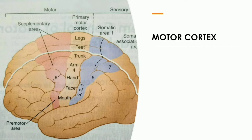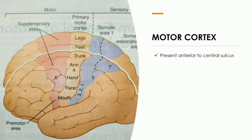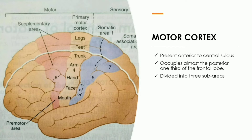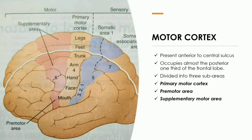The motor cortex is present anterior to the central sulcus. Posterior to the central sulcus is the primary somatosensory cortex, given as Brodmann's areas 3, 1, 2. The motor cortex corresponds to Brodmann's areas 4 and 6, present anterior to the central sulcus, occupying almost the posterior one-third of the frontal lobe. The motor cortex is further divided into three parts: the primary motor cortex, the pre-motor area, and the supplementary motor area.